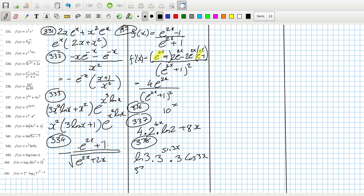339. x power pi, so that would be pi x power pi minus 1. Pi power x, bring down the power, reduce power by 1, plus pi power x times log pi.